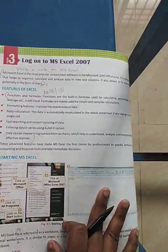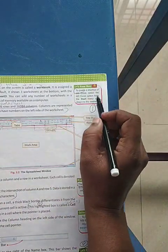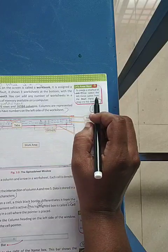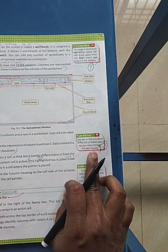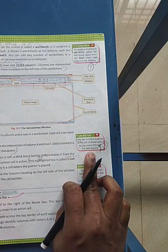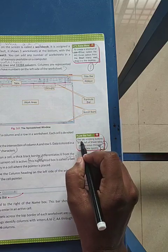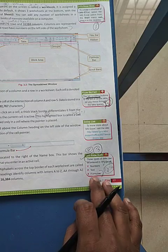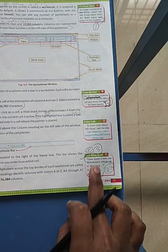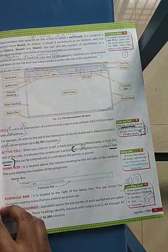Coming to lesson three. The first one-mark is how to create a shortcut for MS Excel from the Start menu. The second one-mark: tab scrolling buttons to the left of the sheet tabs let you move through the tabs quickly. The three types of data entered are numbers, text, and formula. The highlighted box is called the cell pointer.